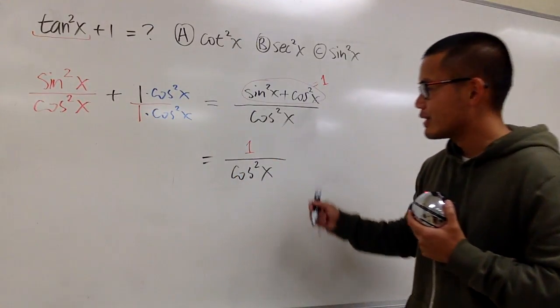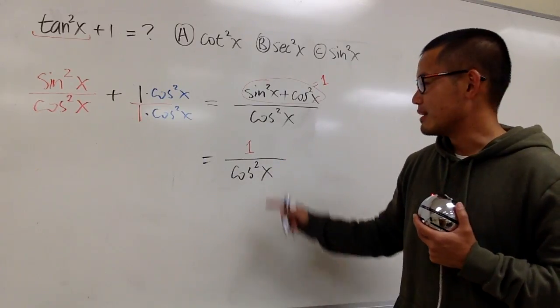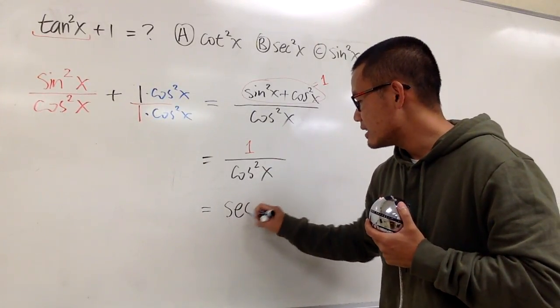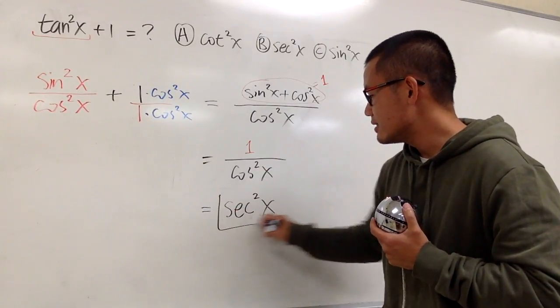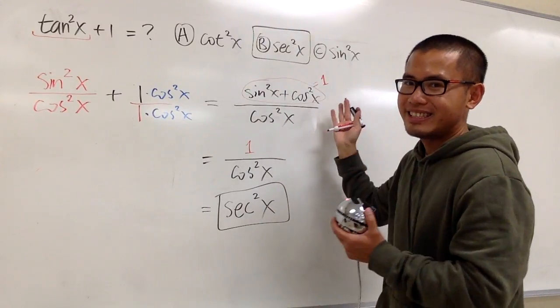And now, what's 1 over cos x? That's sec x, right? But in this case, we have the square, so this is the same as sec²x. And this is what we have, and that's choice b. Okay, and that's it.